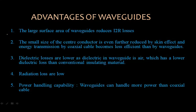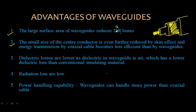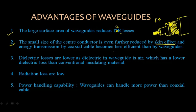The first advantage of waveguides is that the large surface area reduces I²R losses compared to a coaxial cable. A coaxial cable has a small inner conductor surrounded by insulator, then a mesh conductor, then another insulator. Because of this small inner conductor size, as frequency increases the current tries to confine on the surface — giving rise to the skin effect — making the coaxial cable less efficient at microwave frequencies.